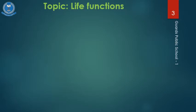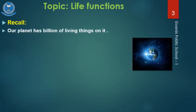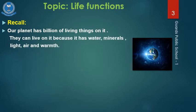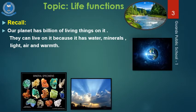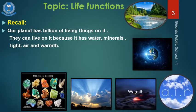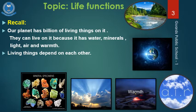Now students, before starting our topic, we should recall something. Our planet has billions of living things on it. They can live on it because it has water, minerals, light, air and warmth. Living things depend on each other. Our planet has water, minerals, light, air and warmth, and all these things are connected to each other and depend on each other.